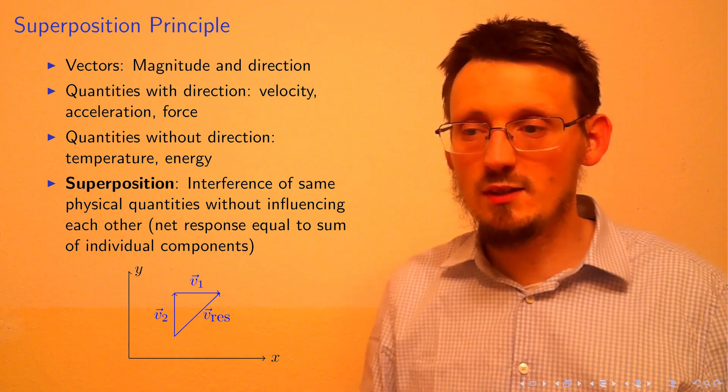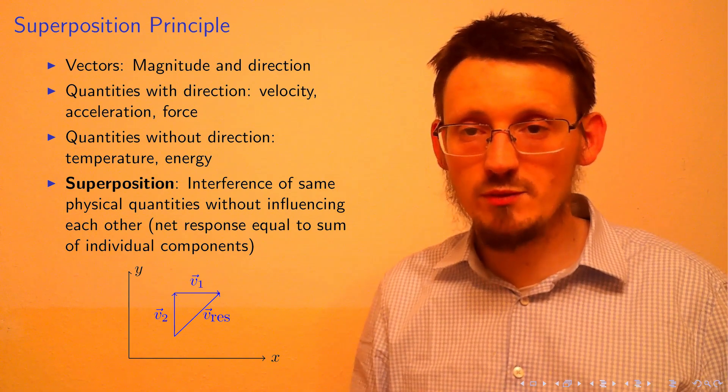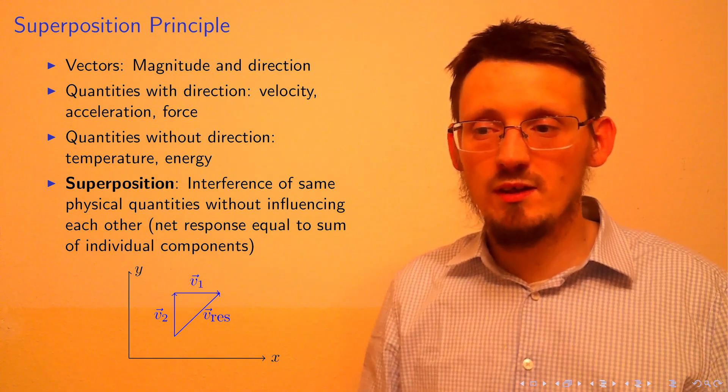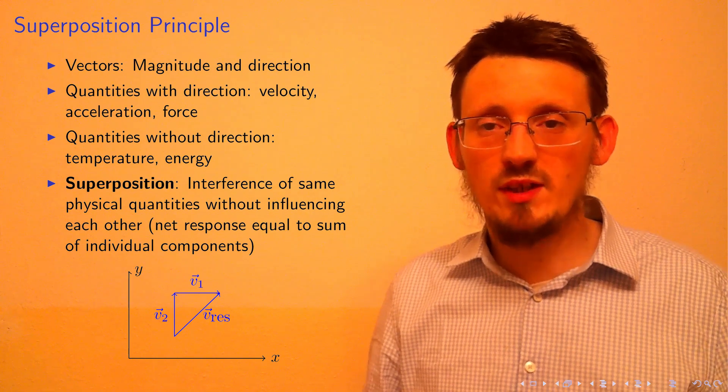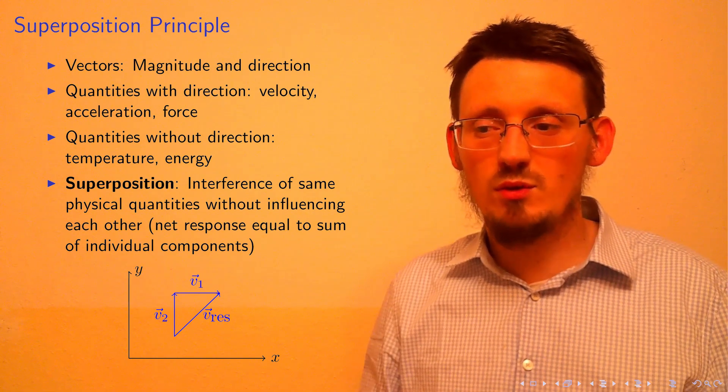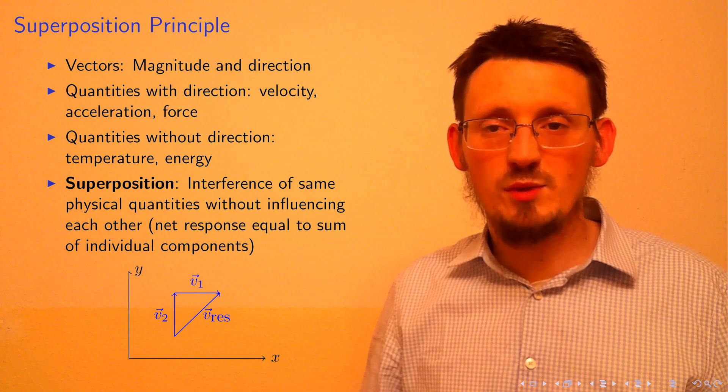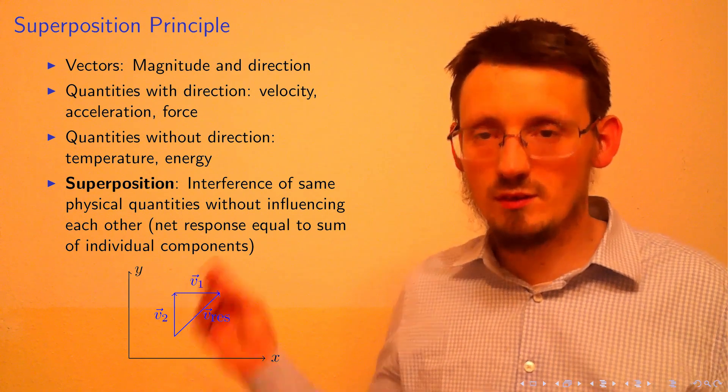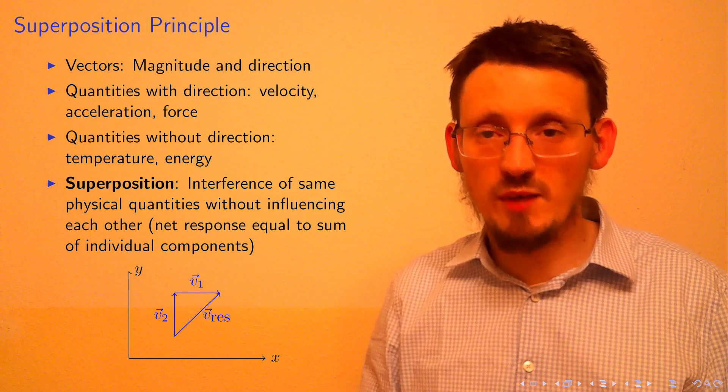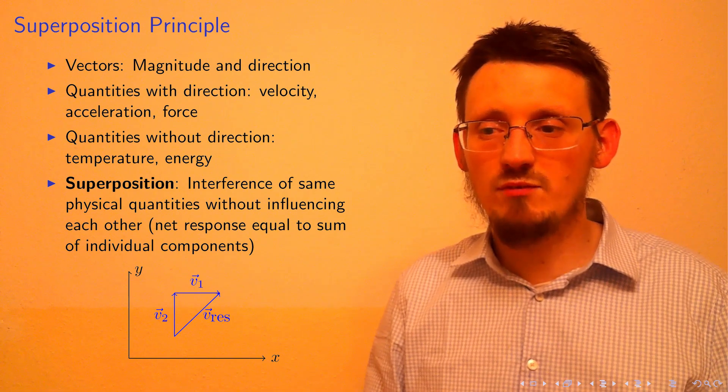In case of velocities, the superposition principle just says that two velocity vectors of an object can always be added up to a resulting velocity. If an object travels with velocity v₁ in x direction and velocity v₂ in y direction, then the resulting vector v_res is just the vector sum of v₁ and v₂.